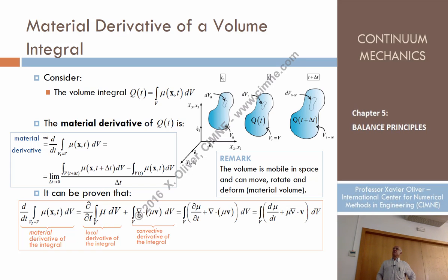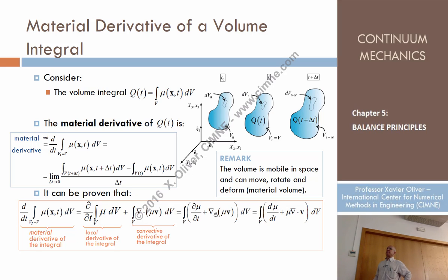We can also bring the local derivative inside the integral, then group the two terms. This shows the material derivative of the integral equals the integral of the local derivative plus the divergence of μv, which equivalently equals the integral of the material derivative of the density μ plus μ times the gradient of v. Please recall that expression, because we are going to use it shortly.